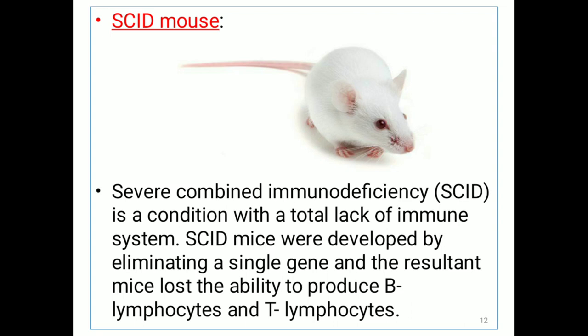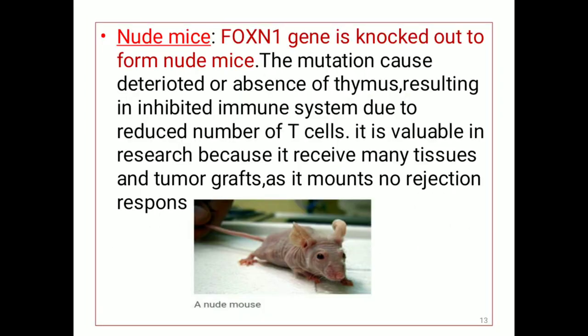There are several knockout mice available nowadays. First, SCID mouse — SCID means severe combined immune deficiency. In this condition, the total immune system is lacking. The SCID mice were developed by eliminating a single gene, and the resultant mice lost the ability to produce B lymphocytes and T lymphocytes. Second, Nude Mice — the FoxN1 gene is knocked out to form nude mice, and the mutation caused deterioration or absence of the thymus, resulting in an inhibited immune system due to the reduced number of T cells. Nude mice are valuable in research because they accept many tissue and tumor grafts as they mount no rejection response.